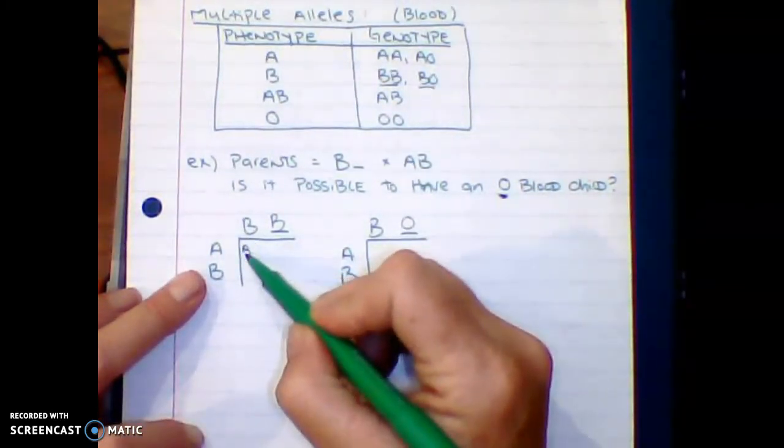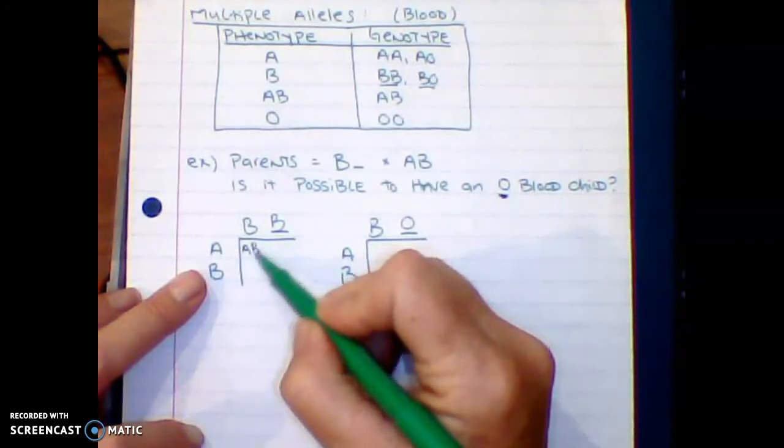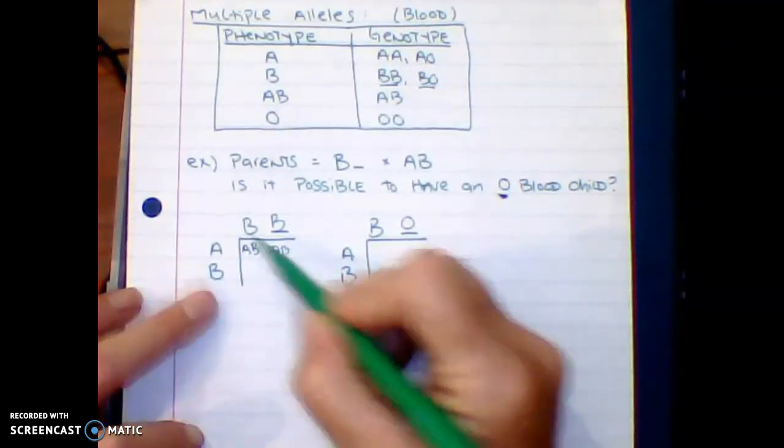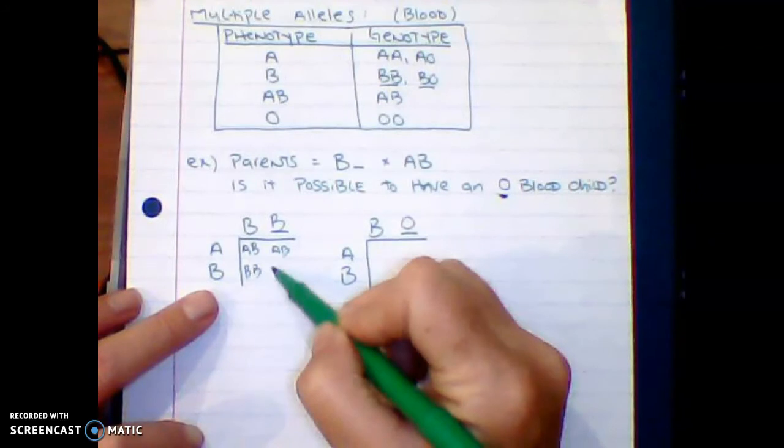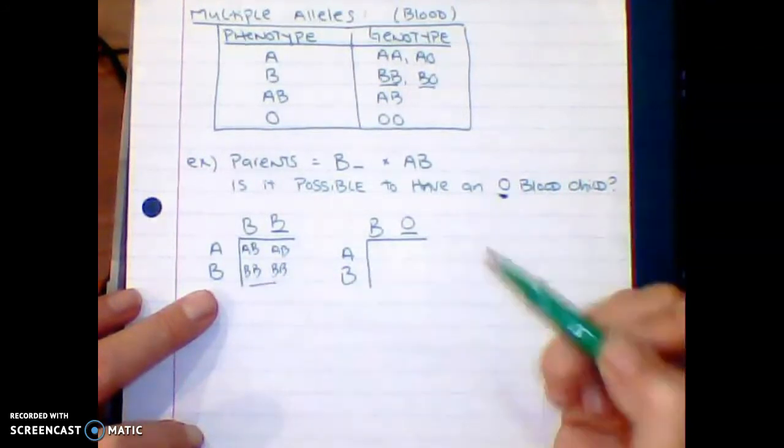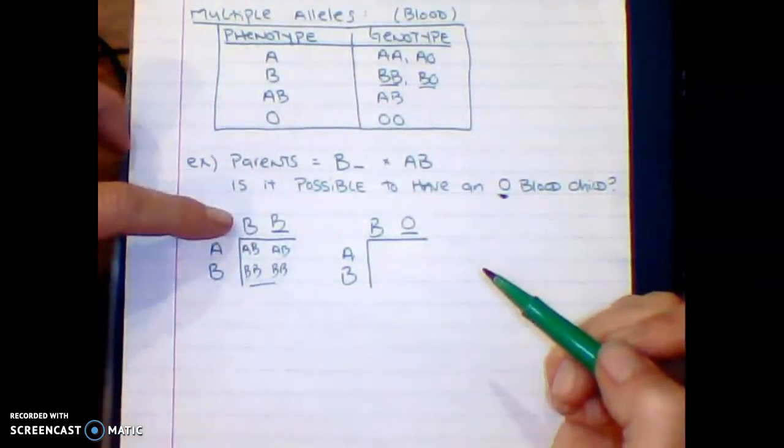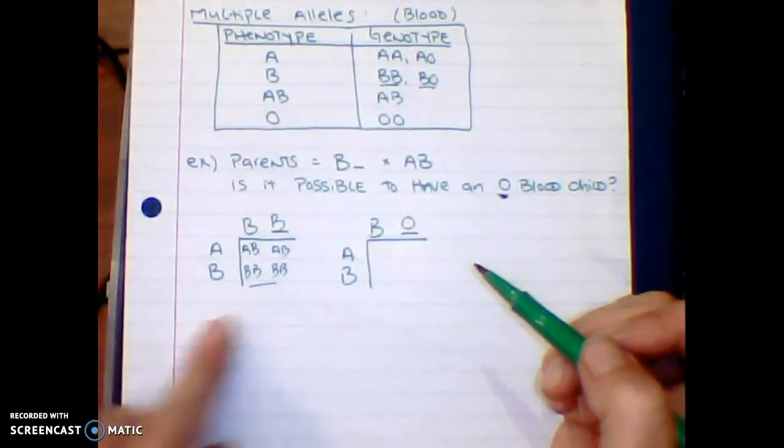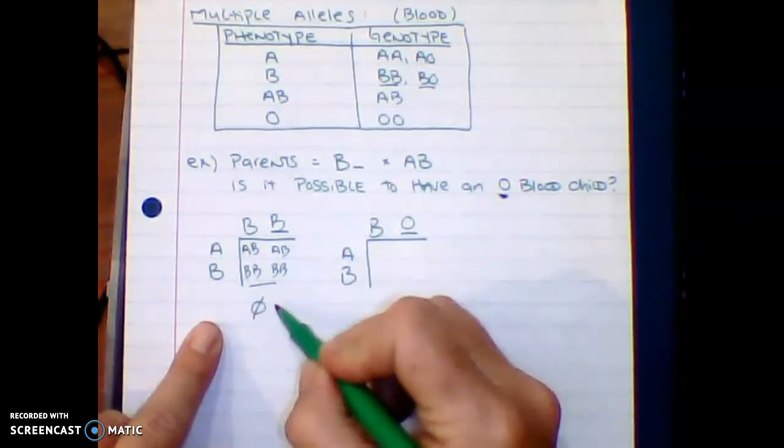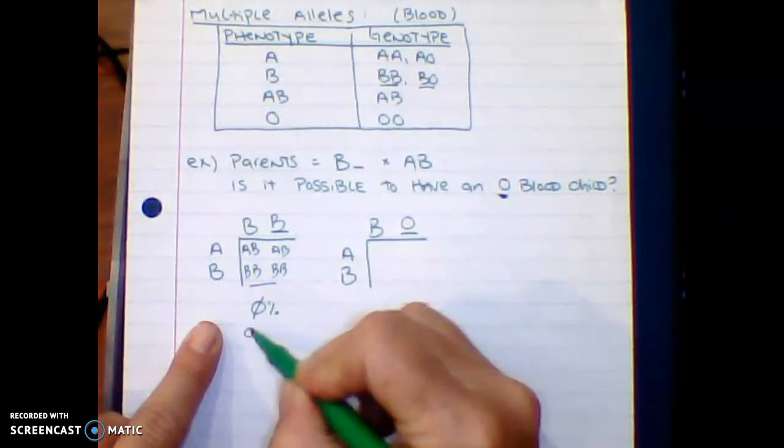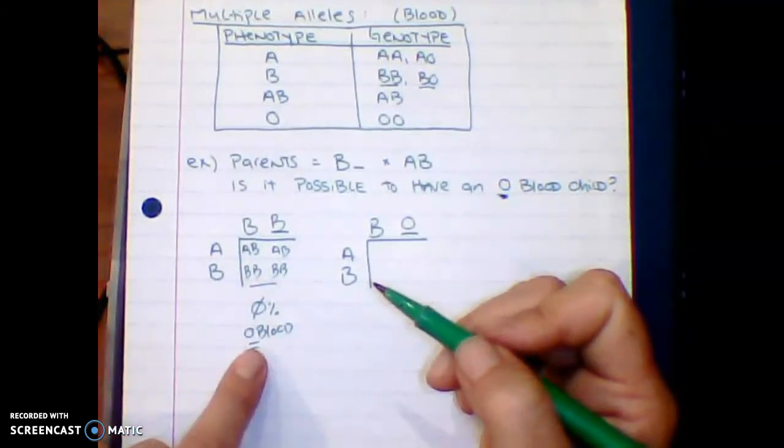So drop it down, bring it over. Now with blood, A always goes first. So bring in the A first and then the B, AB, drop it down, bring it over. So all of these combinations here, if dad was BB, none of the children would be O blood. So 0% O blood.